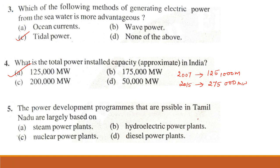Problem 5. The power development programs that are possible in Tamil Nadu are largely based on: steam power plant, hydroelectric power plant, nuclear power plant, diesel power plant. Coal resources are already exhausted and water is limited, so nuclear power plant is possible.